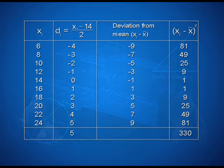The third column shows the deviations from mean xi minus x bar. They can be computed and we have the values minus 9, minus 7, minus 5, minus 3, minus 1, 1, 3, 5, 7, and 9. The fourth column represents xi minus x bar the whole square. 9 squared gives us 81, 7 squared is 49, 5 squared is 25, and so on. We find the total also here; it comes out to 330.